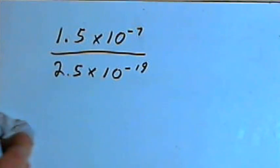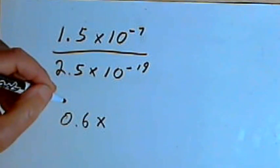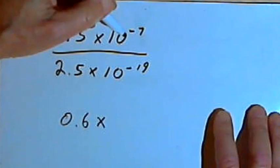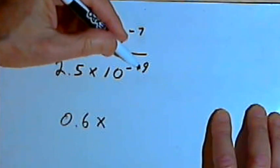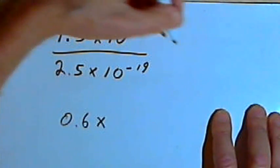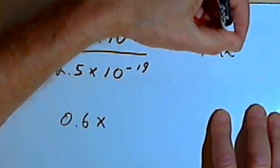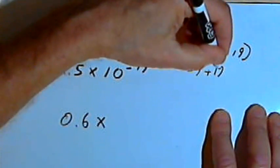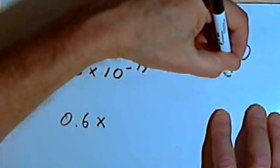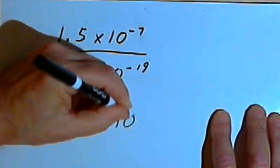So that means I've got, for the first half of my scientific notation, I've got 0.6 times... And now I want to find out what the power of 10 part of it is. So I've got 10 to the negative 7th over 10 to the negative 19th. We have to be careful with these negative exponents. I'm going to take that negative 7 from the numerator and subtract negative 19, which is the same as saying negative 7 plus 19. And negative 7 plus 19 is a positive 12.